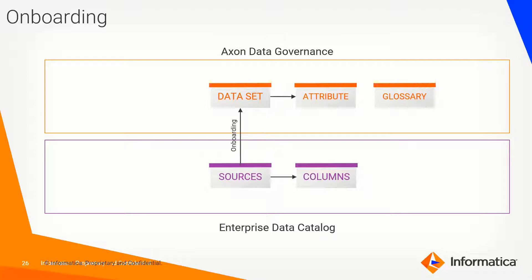You need not physically bring that inside — automatically all that information will be brought because you have already made the marriage between EDC and Axon, between the glossary and something called a data domain on the Enterprise Data Catalog side. Once this information is brought in, you have a good representation of your physical metadata that will help you make decisions on the Axon side.